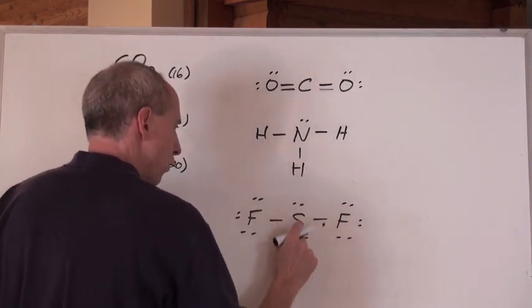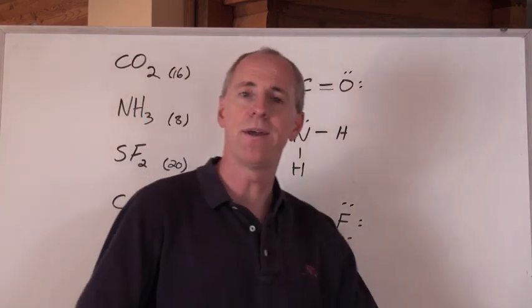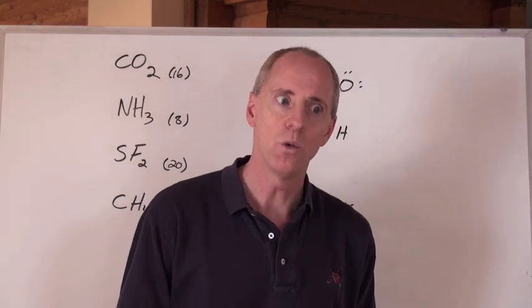Well, look at that. 2, 4, 6, 8 around everything here. And it's 20 total. Ladies and gentlemen, that's it right there. The Lewis diagram for SF2. Woo!